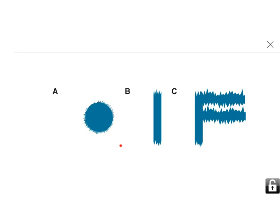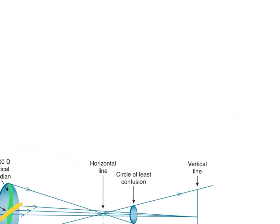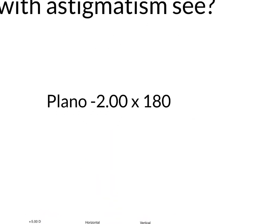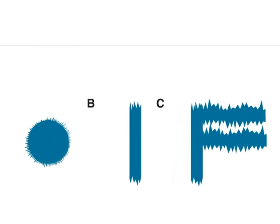What happens here is a person with this type of astigmatism, simple myopic astigmatism, the vertical lines are nice, clear, and sharp, and the horizontal lines are blurry. So, this jaggedness represents blur.